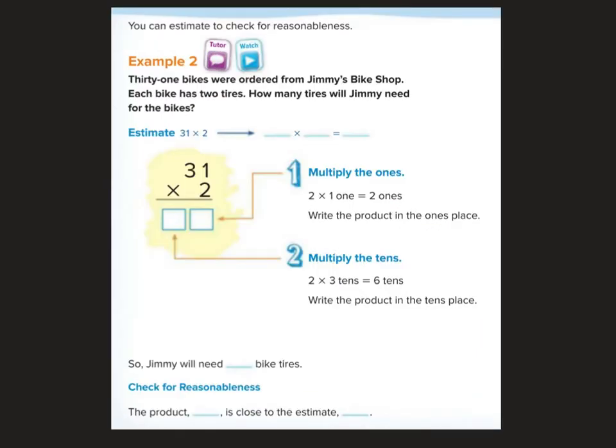You can estimate to check for reasonableness. It says 31 bikes were ordered from Jimmy's bike shop. Each bike has two tires. How many tires will Jimmy need for the bikes? If I were to estimate 31 times 2, I would do 30 times 2, which is not so bad. We're just doing 30 plus 30, and that's 60. Our answer should be close to 60.